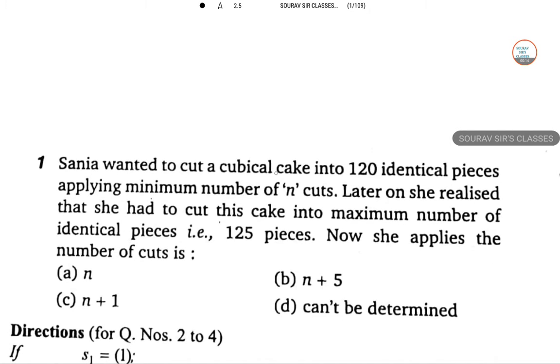First one is Sanya wanted to cut a cubical cake into 120 identical pieces applying the minimum number of cuts. Later on she realized that she had to cut this cake into maximum number of identical pieces, that is 125. So now she applies the number of cuts as.